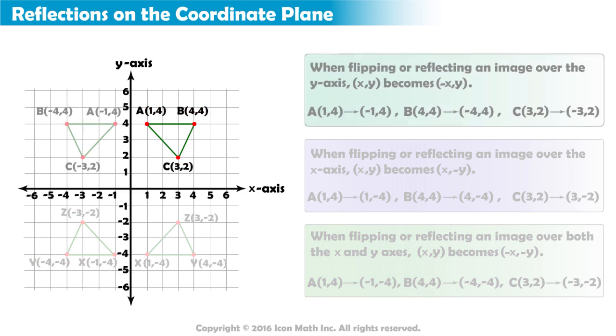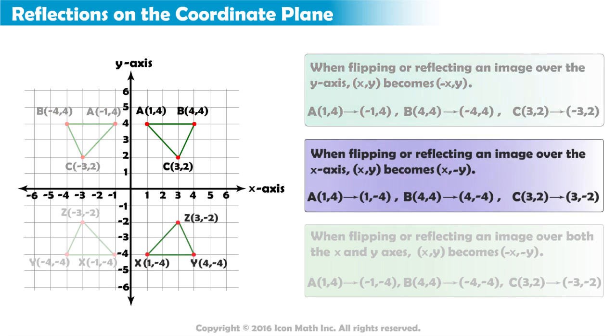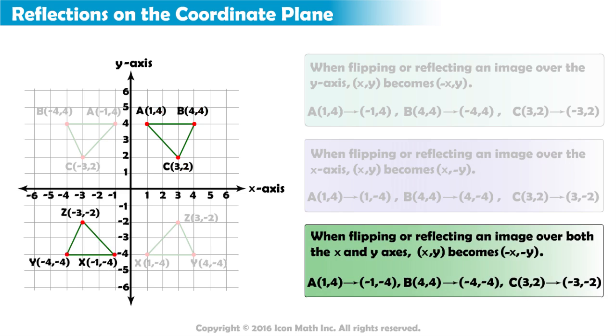In summary, when reflecting over the y-axis, (x,y) becomes (-x,y). When reflecting over the x-axis, (x,y) becomes (x,-y). And when reflecting over both the x and y-axis, (x,y) becomes (-x,-y).